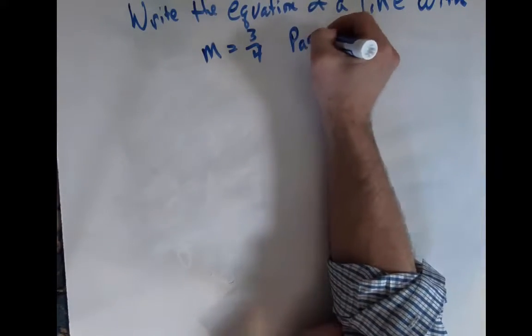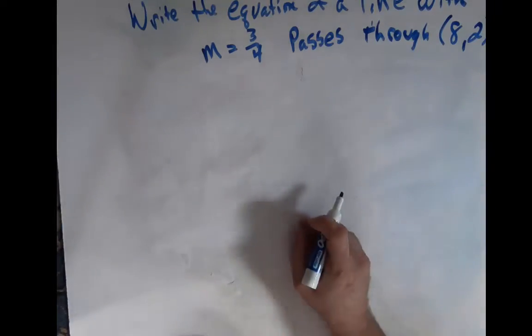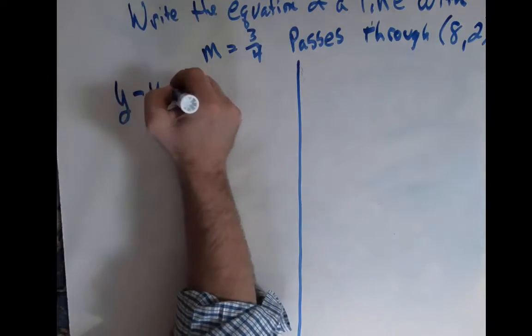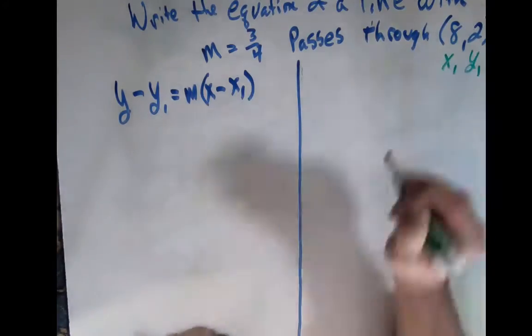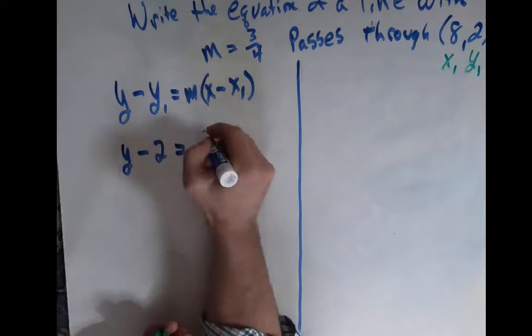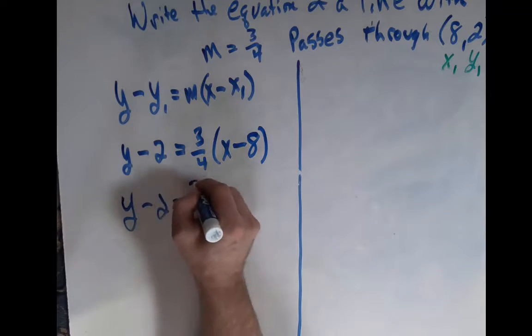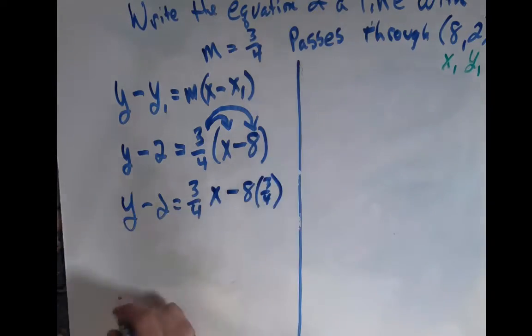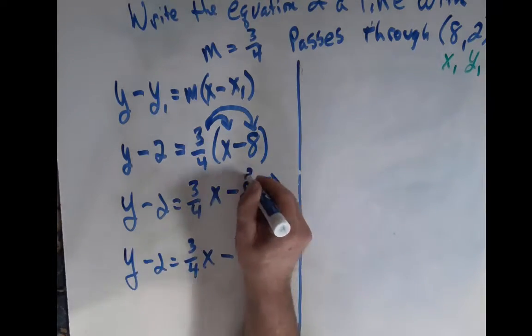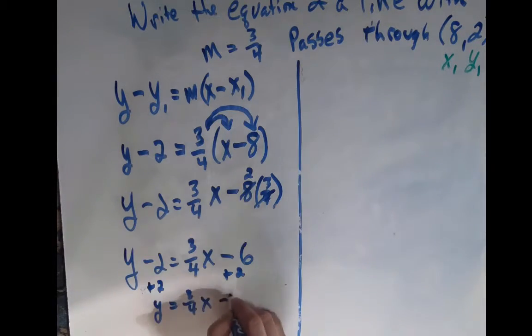Let's try one where they don't give us the y intercept. We have a slope of 3 fourths and it passes through the point 8 comma 2. I'm going to do this in two different ways. The first way I'm going to use the point slope equation of a line and I have my x1 and my y1 with the 8 and the 2 and I'm just going to plug those in. So y minus 2 equals 3 fourths times x minus 8 and I'm going to distribute the 3 fourths through and we'll get 3 fourths x minus 8 times 3 fourths and we know 8 times 3 fourths is 6.